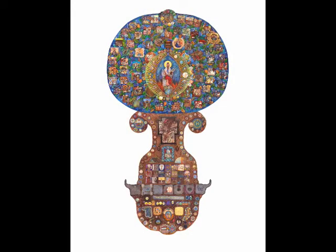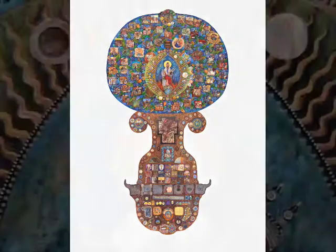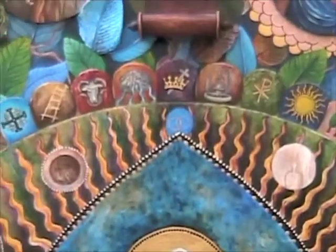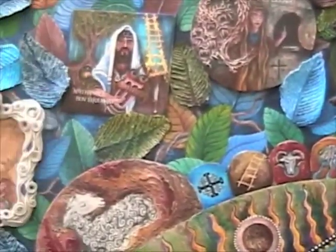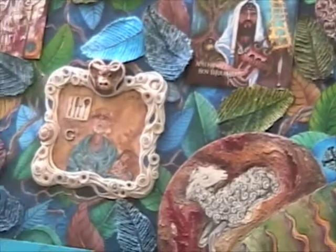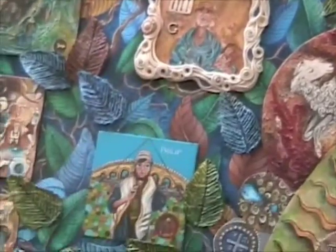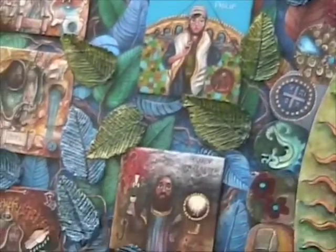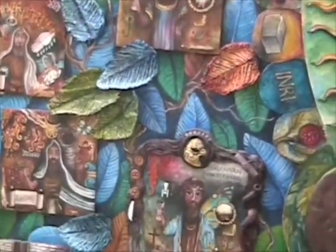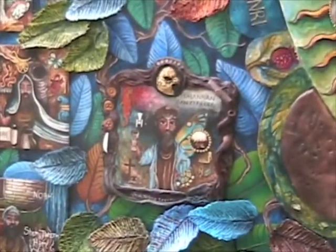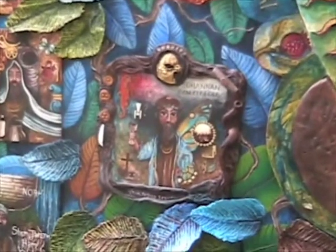Hello and welcome to the Nazarene Cipher. This is Theophilus Cleft, and today we'll be discussing the panel of John, or Yohanan ben Zebedee — Yohanan son of Zebedee. This piece is found on the upper section of the Nazarene Cipher within the Ring of Disciples.